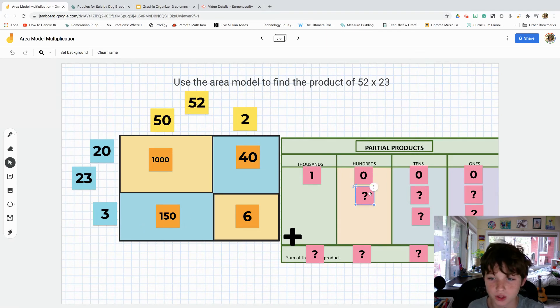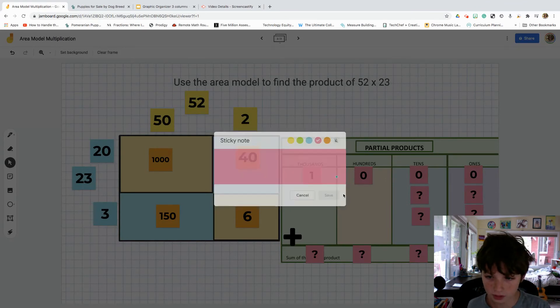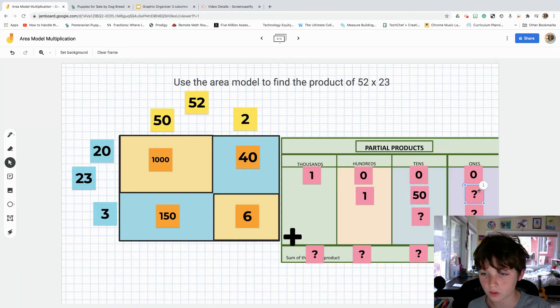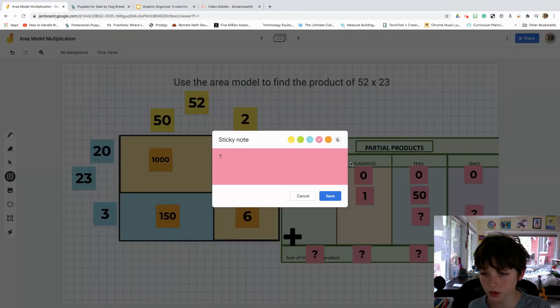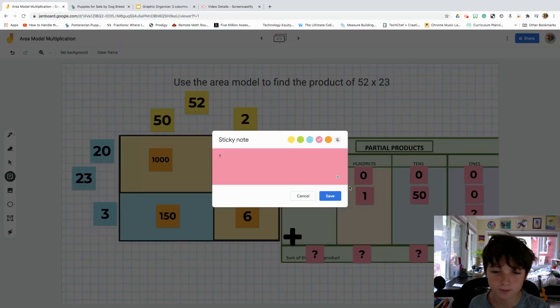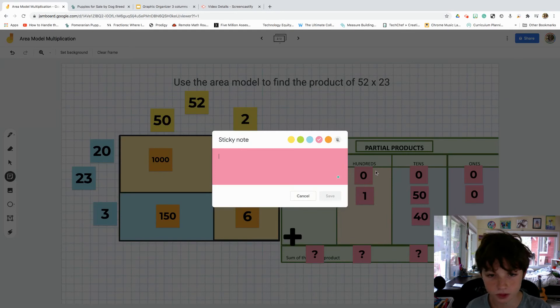And then the hundreds. Well, 150. So, 150, so 1, 50, then zero. And then the final 10, 40. Okay, so 40. And then zero.